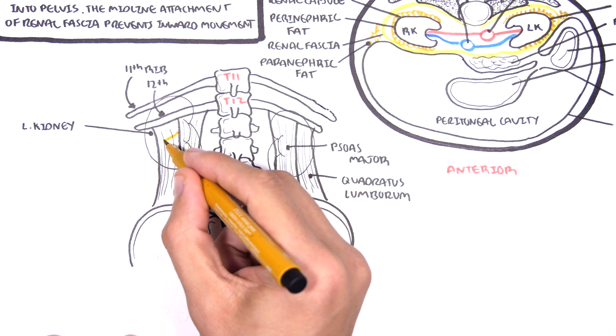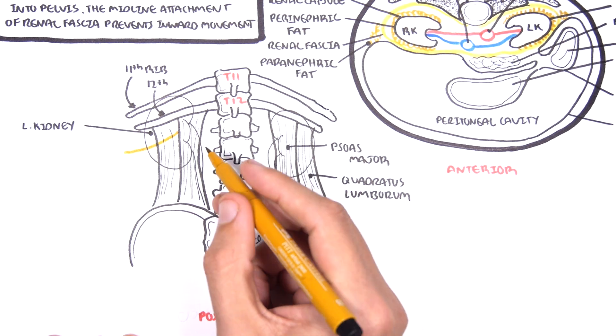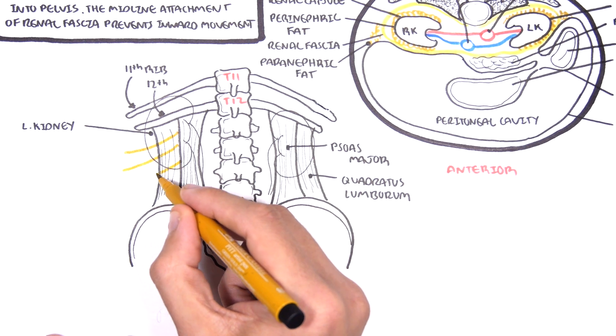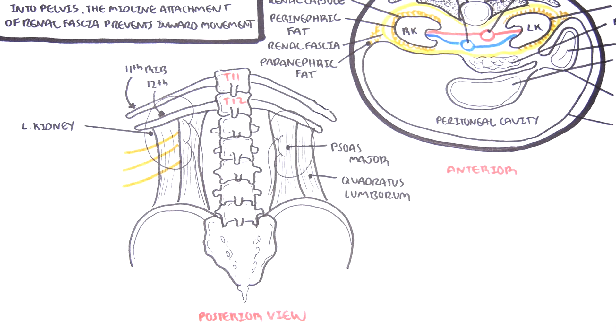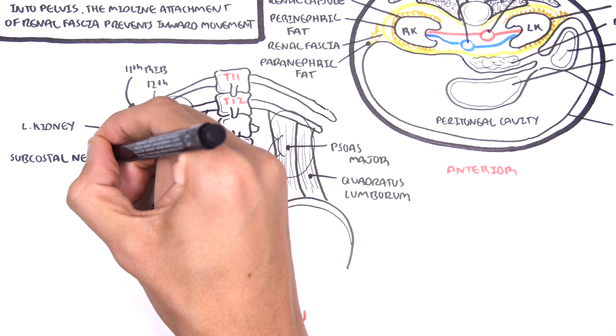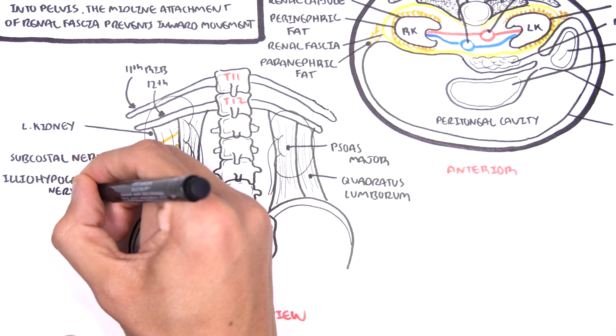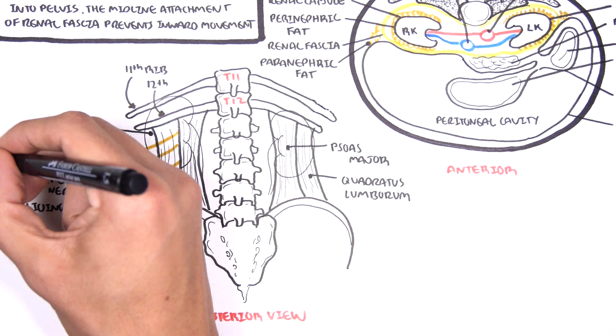During nephrectomy, there are nerves which need to be kept in mind which pass around these muscles and also which are in close relationship to the kidneys. There are three nerves, the subcostal nerve, the iliohypogastric nerve and the ilioinguinal nerve.